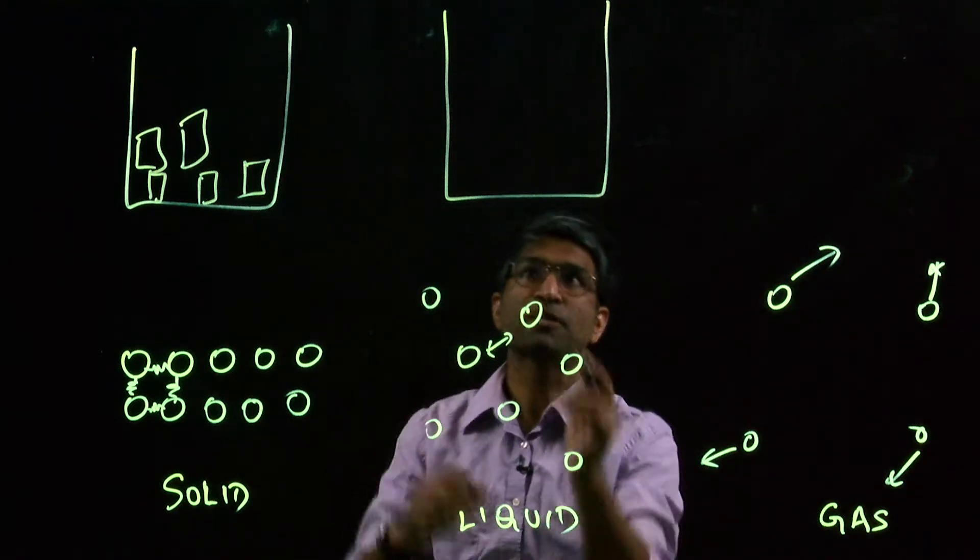When you have a liquid, because these molecules can flow past each other, they can slip and slide past each other, a liquid will attain the shape of the container. It won't change its volume because these molecules are still bound together but it will attain the shape of the volume.